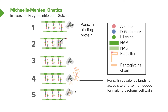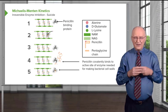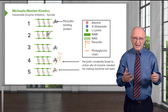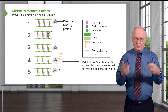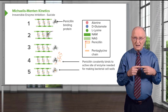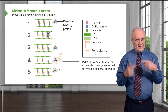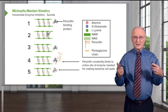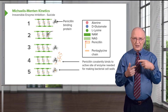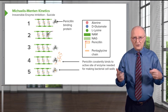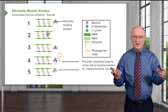An example of suicide inhibition is the action of penicillin, which we use to kill bacteria. Penicillin works by inhibiting the bacterium's ability to make cell walls. Cell walls are important for cells — without a wall, you don't have a cell. Penicillin mimics the normal substrate that the enzyme making cell walls uses, called the pentaglycine chain. Because penicillin resembles it, the enzyme binds to it like it would bind to the normal substrate, but penicillin then makes a covalent bond. So in suicide inhibition, the enzyme is completely destroyed and never gets a chance to come back and do its thing.